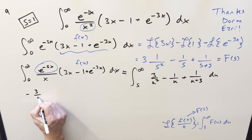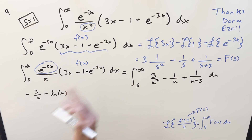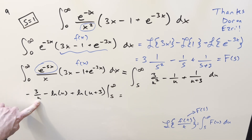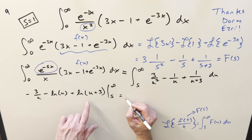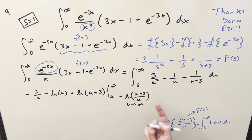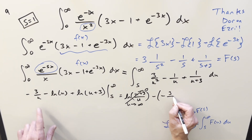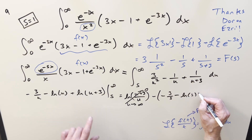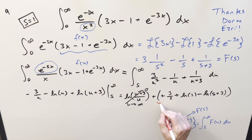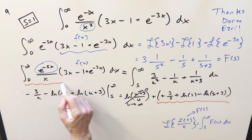Integrating that expression, we get [-3/u - ln(u) + ln(u+3)] evaluated from s to infinity. Since s > 0, u > 0, so no absolute values needed. Plugging in infinity: -3/u goes to 0, and ln((u+3)/u) → ln(1) = 0. Evaluating at s gives us 3/s + ln(s) - ln(s+3). After distributing the minus sign, our solution in terms of s for the one-1/x integral is: 3/s + ln(s) - ln(s+3).